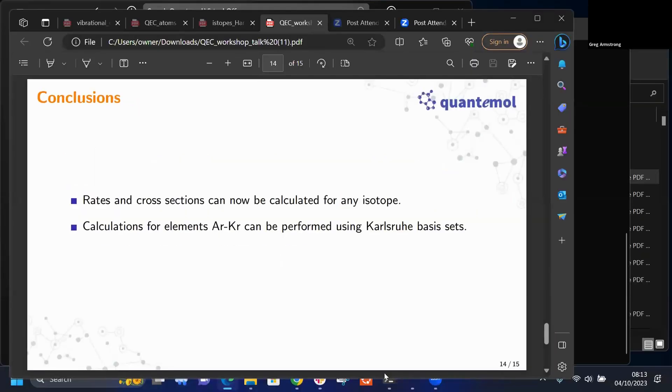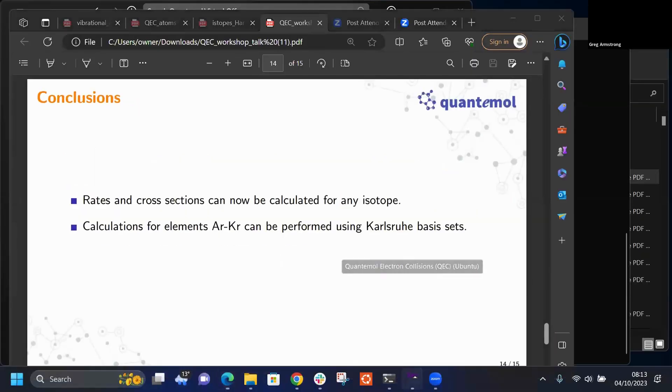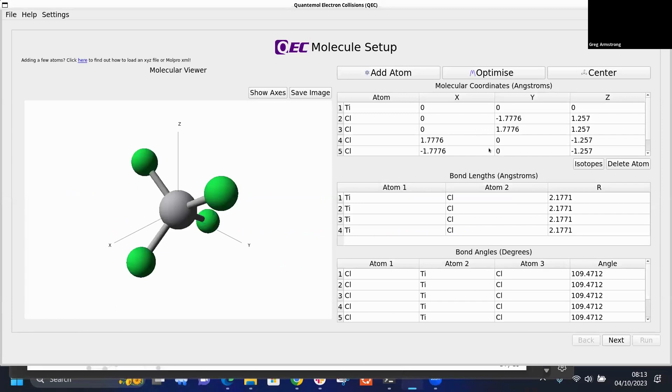This is the actual QEC GUI interface. This is a titanium tetrachloride molecule which I've preloaded. At the start of a QEC calculation you enter all of these Cartesian coordinates which you can get from the NIST database for all of the atoms that you choose, so I've set up titanium tetrachloride.